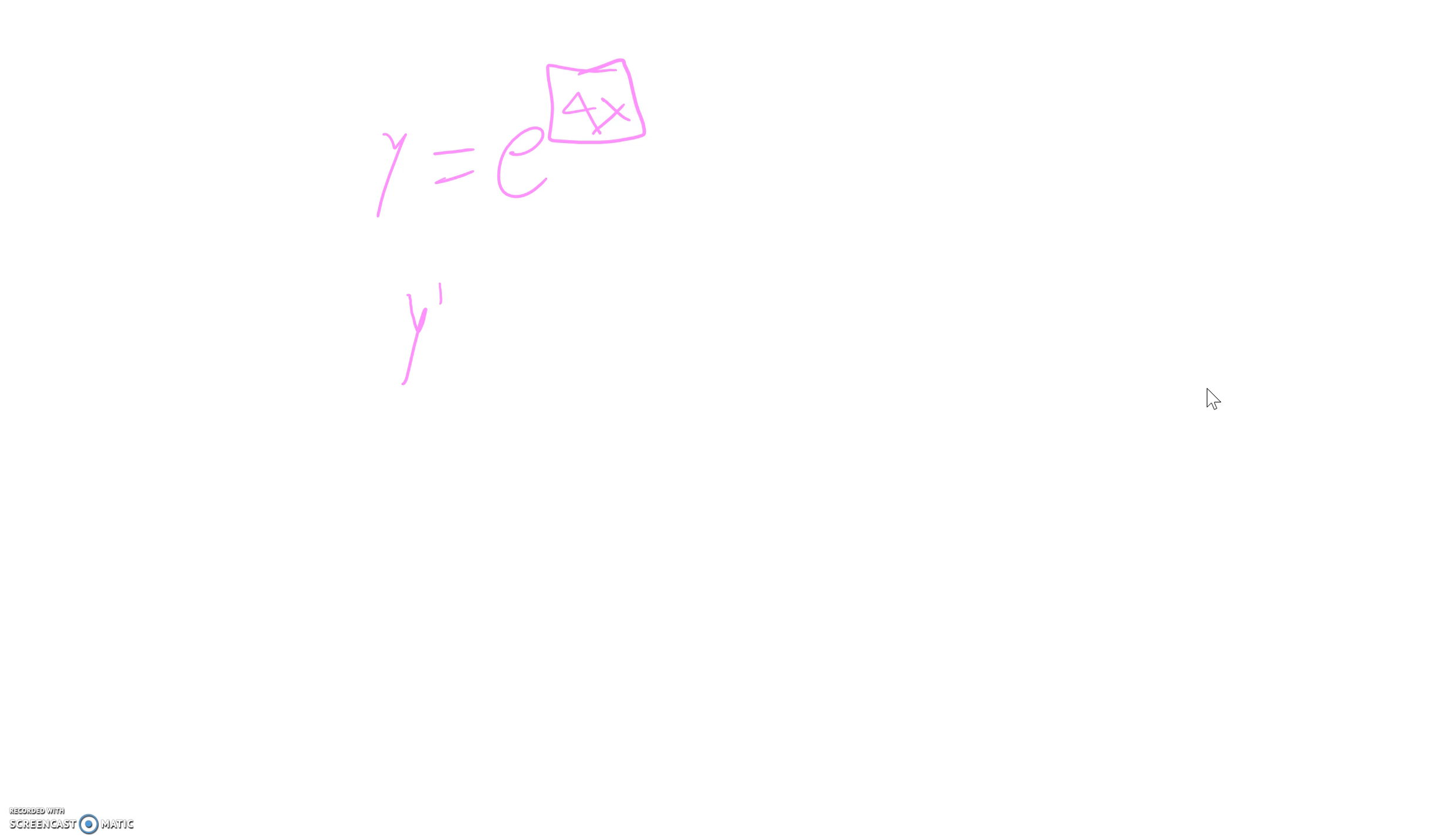So, box that because that's what we don't know how to work with. So, y prime of this is just going to be e, keep it just e to the x. So, it would just be e to the 4x because in this case, 4x is your x. So, e to the 4x.